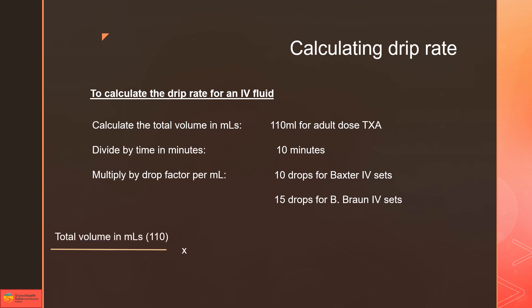To calculate the drip rate, you take the total volume in mls—in this case 110—divide it by the time in minutes which is 10 minutes, then times it by the drip rate which is 10 for the Baxter sets. That means we want to do 110 drops per minute to infuse the whole medication over 10 minutes.